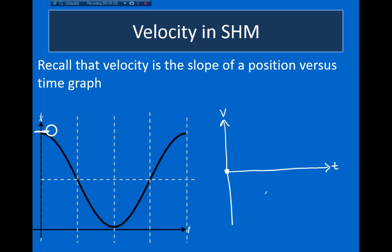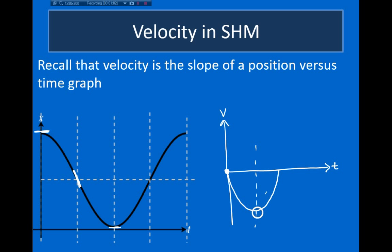So initially it starts out at zero. The slope is slightly negative, becoming more and more negative. At this point right here, I have a maximum negative slope. After this point, the slope becomes less and less negative, and eventually the slope becomes zero again. So if I plot the velocity versus time, I might expect to see something that looks like this, where this point right here — where I have a maximum negative velocity — corresponds to this point right here in the position versus time graph.